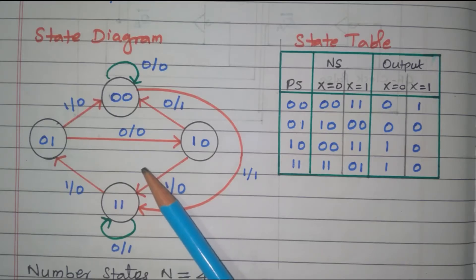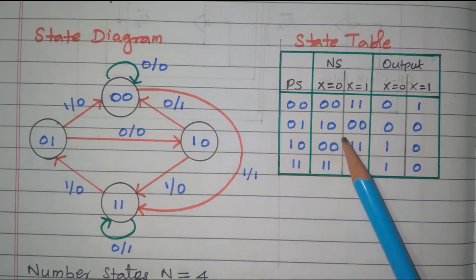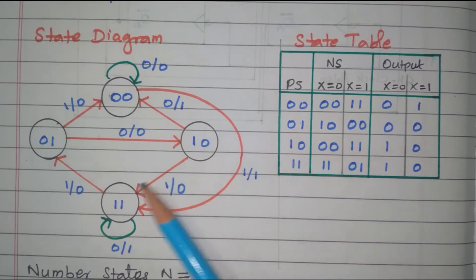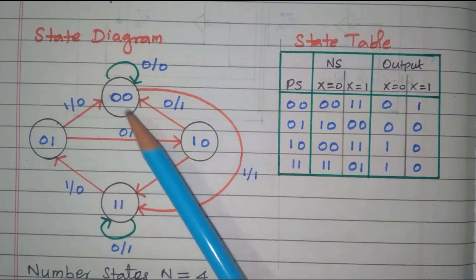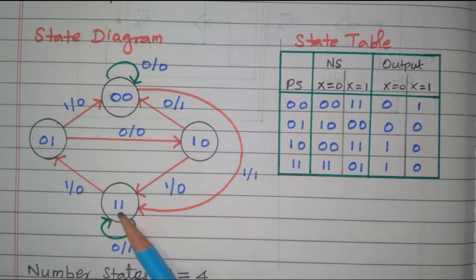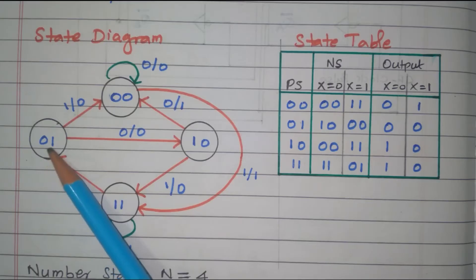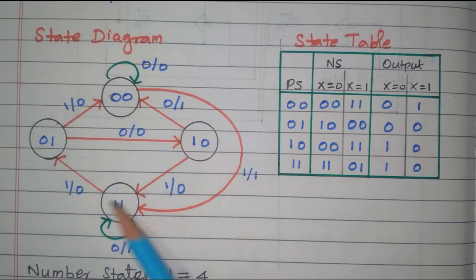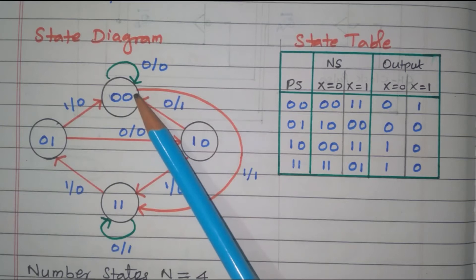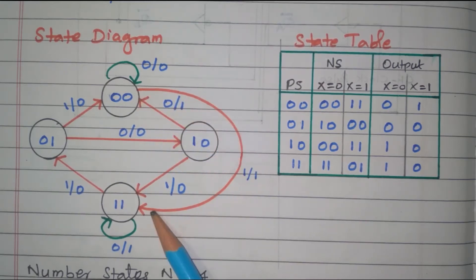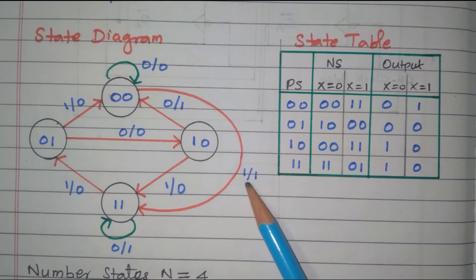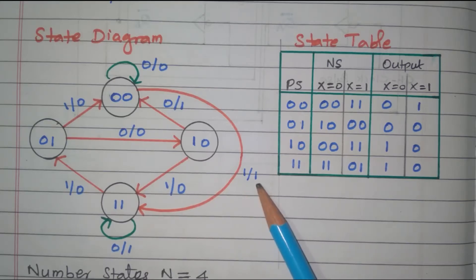First, from the state diagram we will develop the state table. This state diagram has four states available: 00, 10, 11, and 01. The line indicates the state going from one state to another state. For those transitions, the two digits shown are: first digit is the input, second digit is the output.